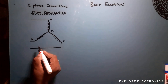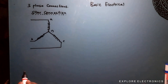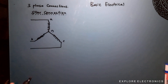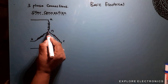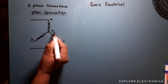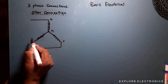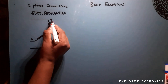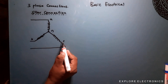In this circuit you can see three coils connected together in a star connection fashion, where one end of each coil is connected to a neutral point N. The other ends are open — that is points A, B, and C.